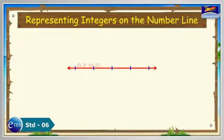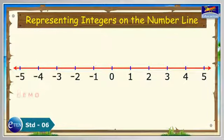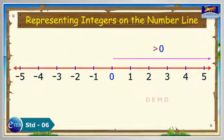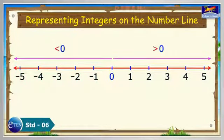We have seen as to how whole numbers are represented on the number line. Every number right to zero is greater than zero. We know that negative numbers are less than zero. Therefore, the negative integers should be on the left of zero on the number line.